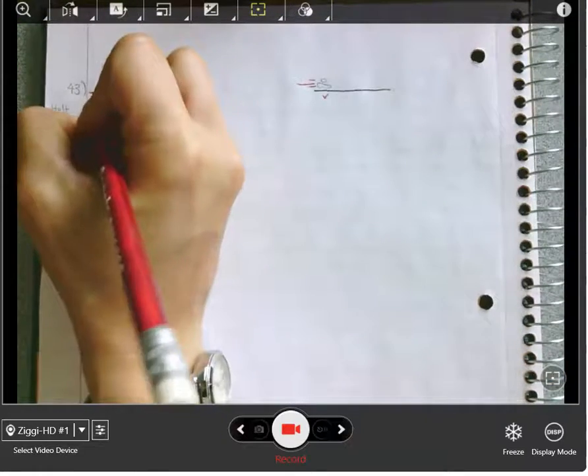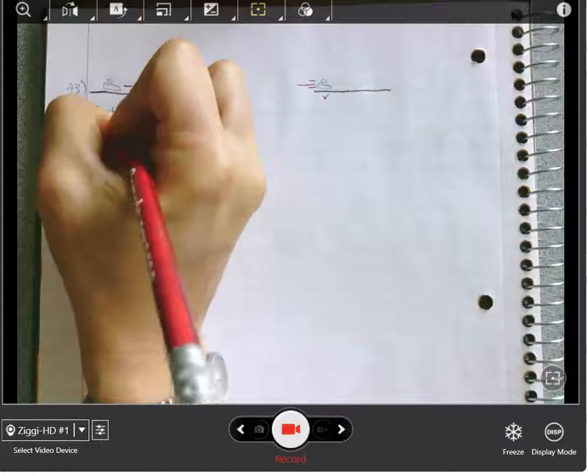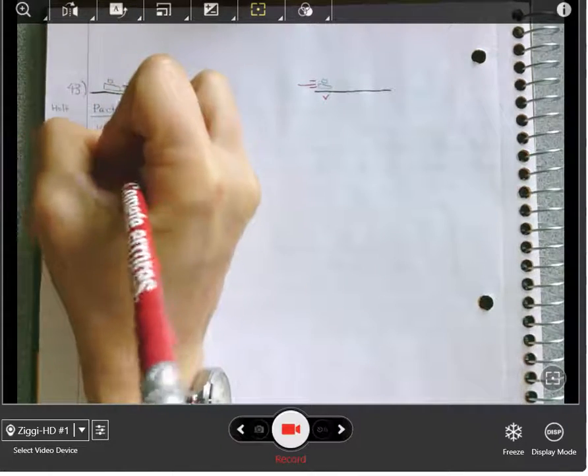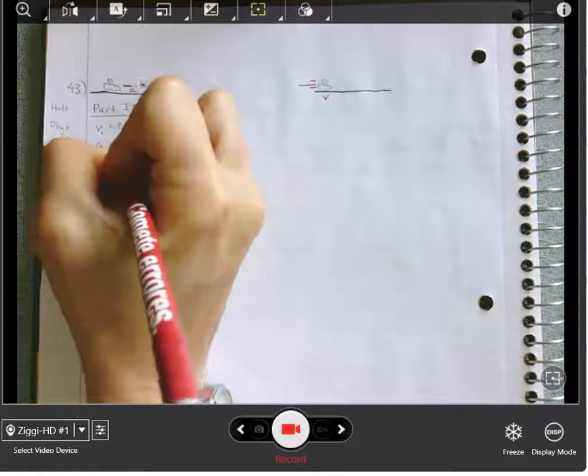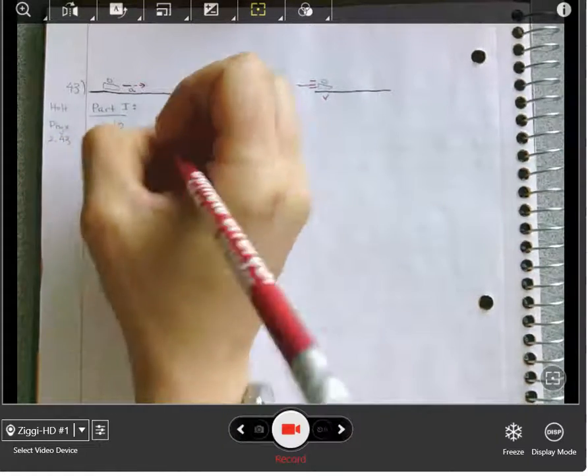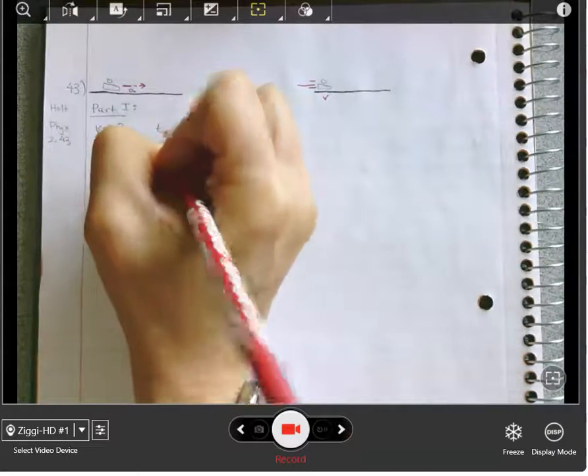Part one is when the sled is traveling at a constant acceleration. We know the initial velocity is zero. We know the acceleration, it's given by the problem. And we know we're given time t1.